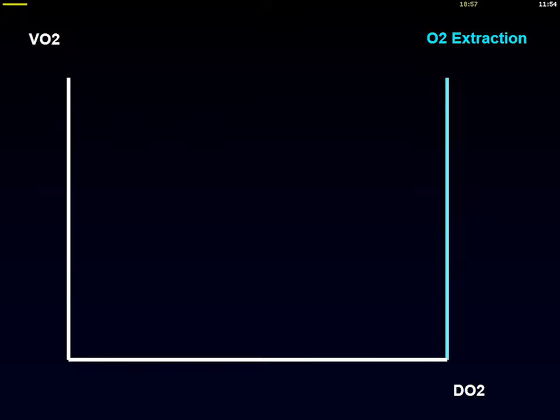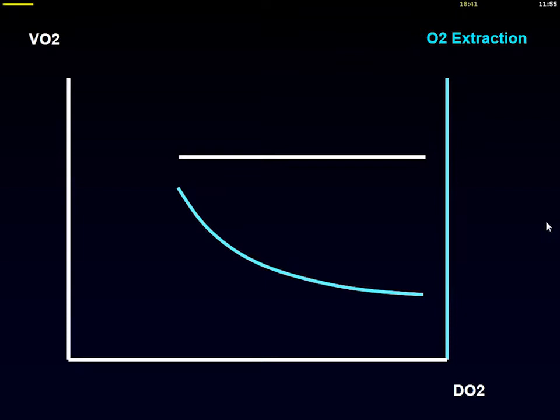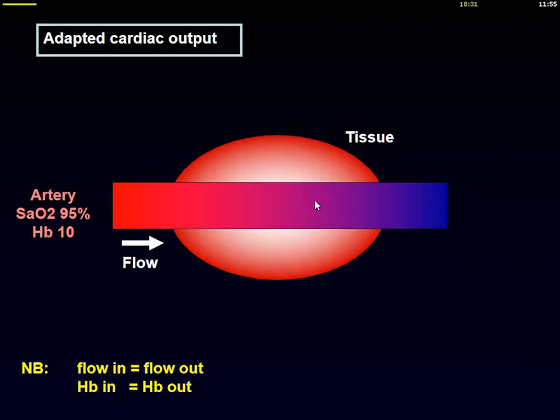Back to physiology, we have to look at the usual relationship between oxygen consumption and oxygen delivery. In compensated states, even when we have a decrease in oxygen delivery, there is a compensatory increase in oxygen extraction so that oxygen consumption by the cells remains constant. This is because in these conditions cardiac output is somewhat adapted initially.